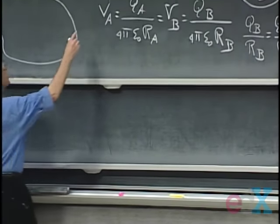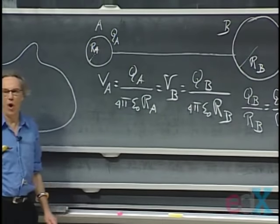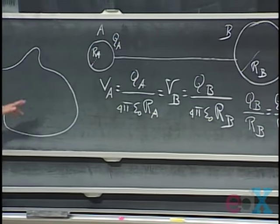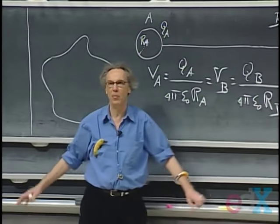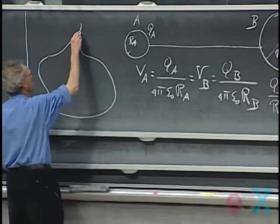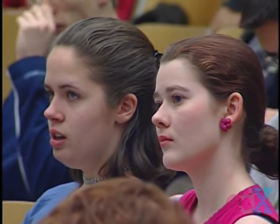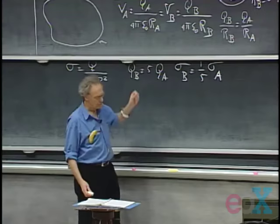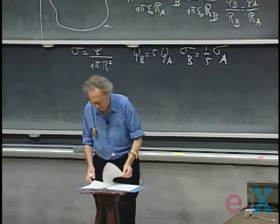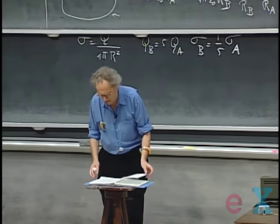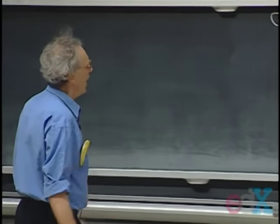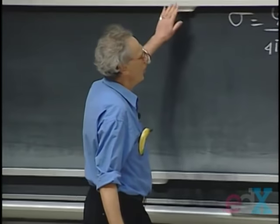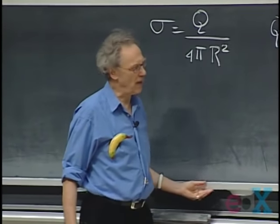So you have five times higher surface charge density at A than at B. I hope that convinces you that if we have a solid conductor like this, even though it's not ideal like the two spheres far apart, the surface charge density will be larger where the radius is smaller — it's basically the same idea. You expect the highest surface charge density where the curvature is the highest, the smallest radius, and that means the electric field will also be stronger there.